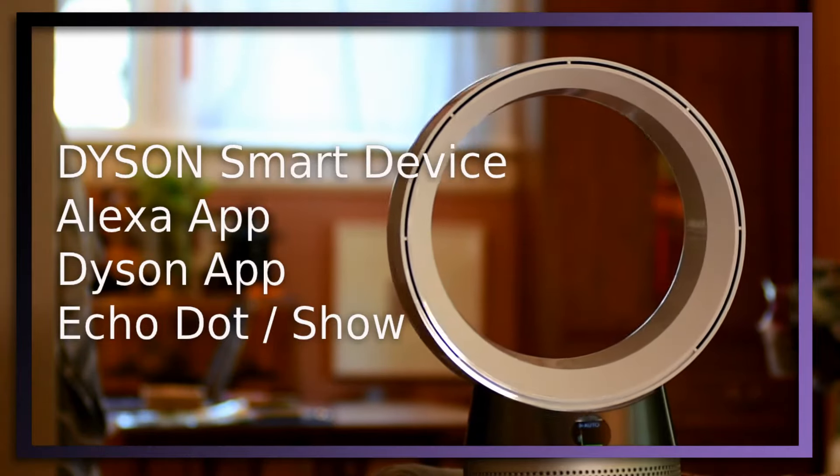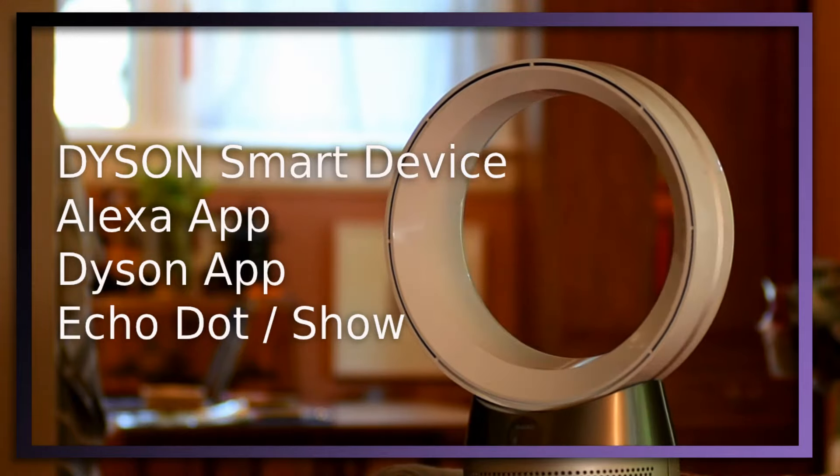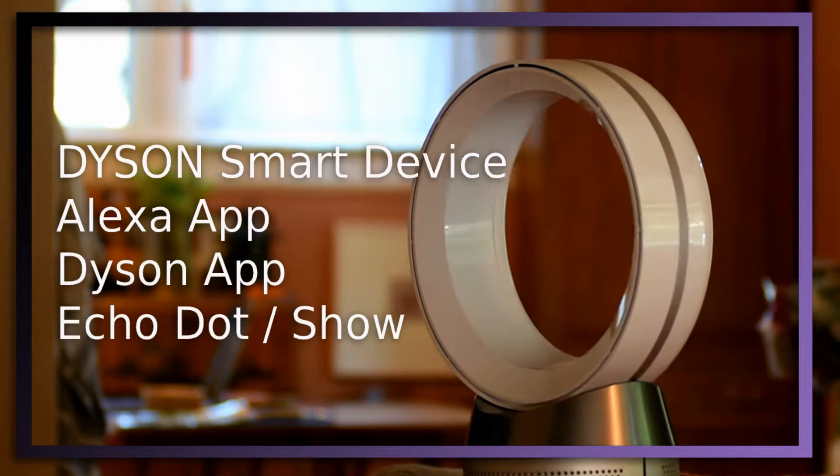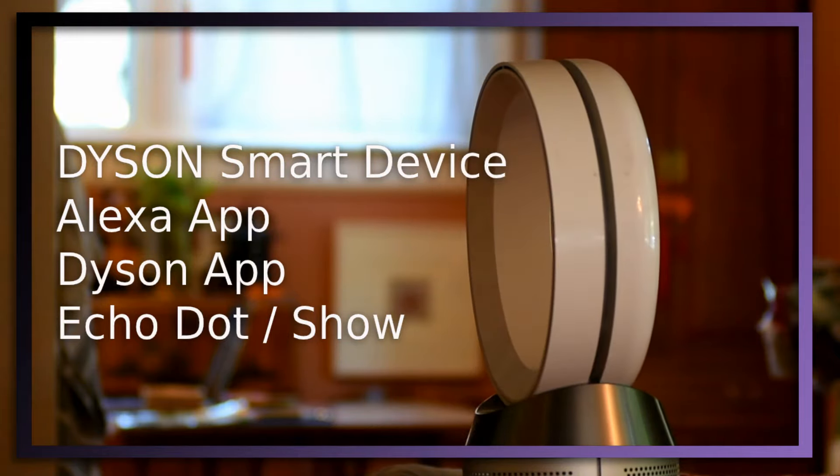So you will need a Dyson smart device, the Alexa app, the Dyson app, and then your Echo dot and or show, because you'll need something to talk to.